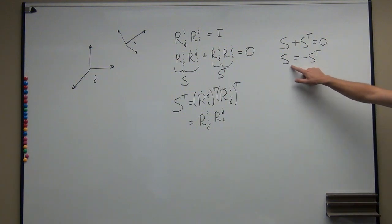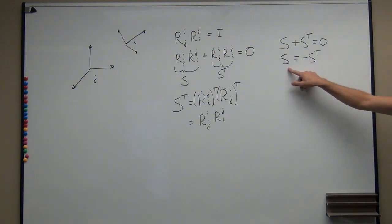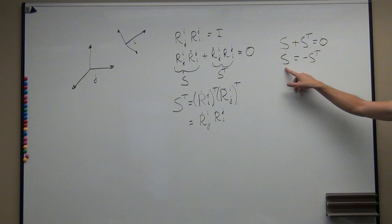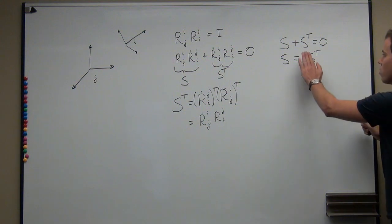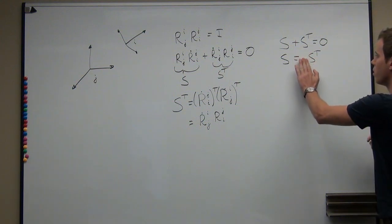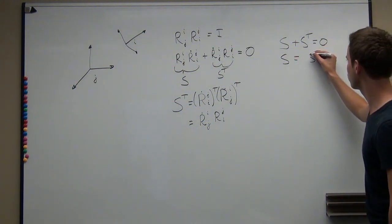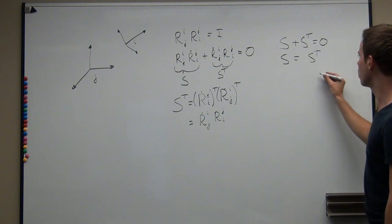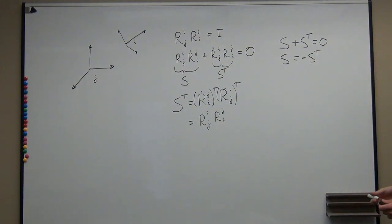Does anybody know what a matrix with this property is called? Skew symmetric — right. It's not symmetric, which would mean S equals S-transpose, but the minus sign here means it's skew symmetric. So let's look at what a skew symmetric matrix looks like.